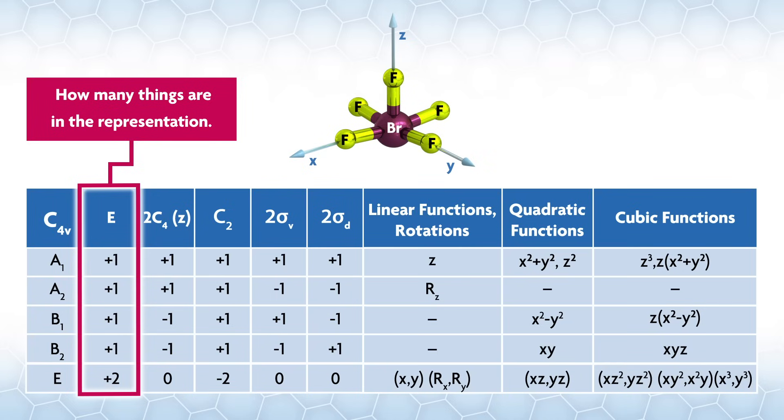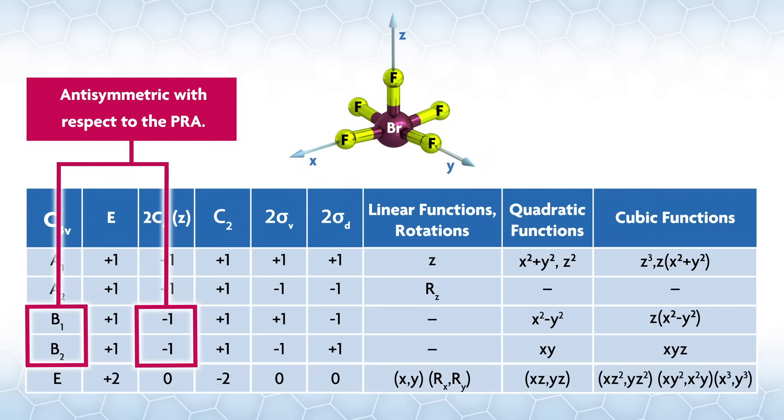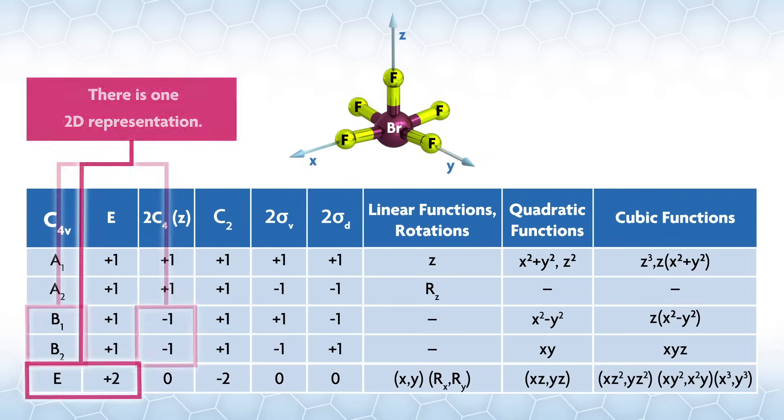To decide which of the one-dimensional representations are A's and which are B's, we look at the principal rotation axis, in this case C4. If the representation is symmetric with respect to the principal rotation axis, there is a plus one and is given an A. If it is anti-symmetric with a negative one, it is given a B.